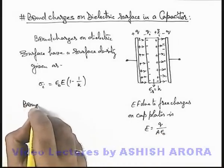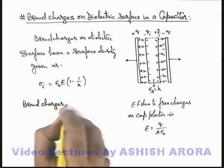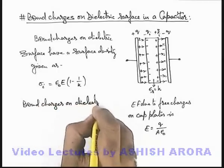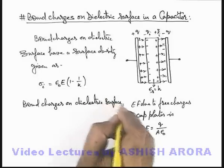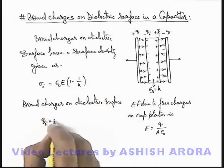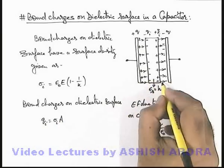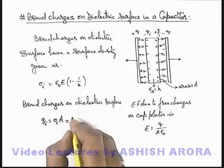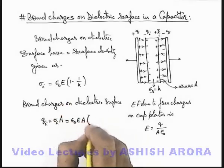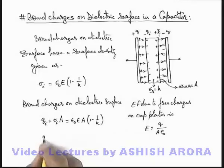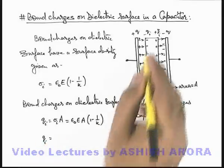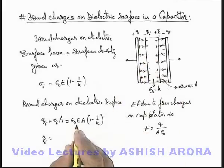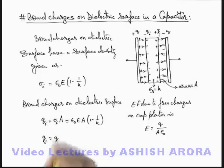So in this situation, bound charges on the dielectric surface can be directly calculated. This can be written as q_i, which is equal to sigma_i multiplied by the area A of this dielectric surface. On substituting the value, using E = q/(A·ε₀), we get sigma_i times A = ε₀ · (q/Aε₀) · (1 − 1/k) · A. The A and ε₀ cancel out, giving q_i = q(1 − 1/k).